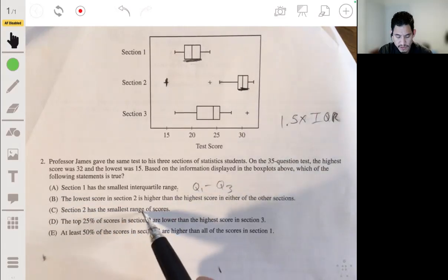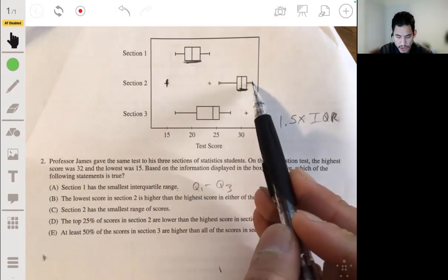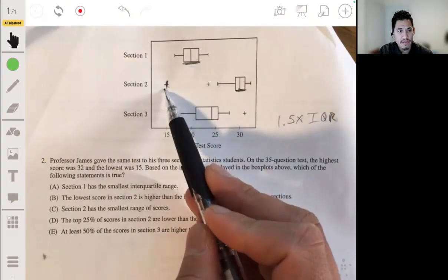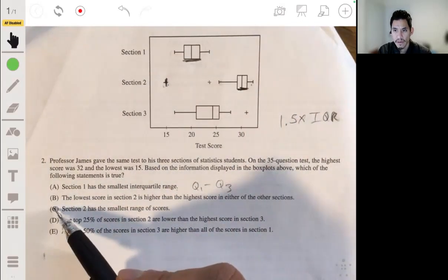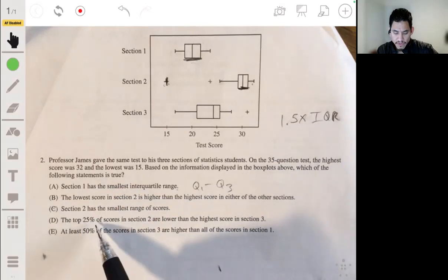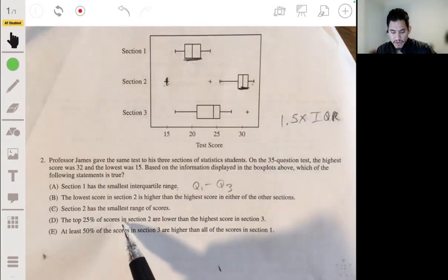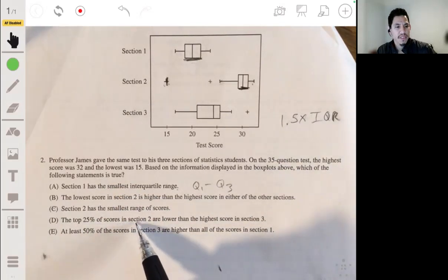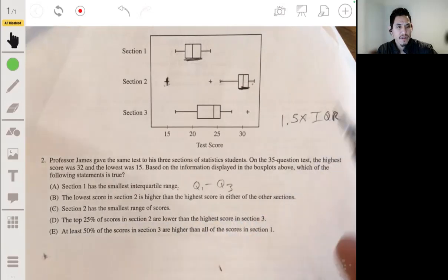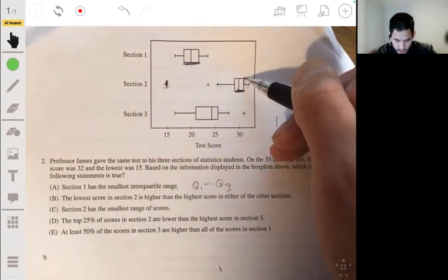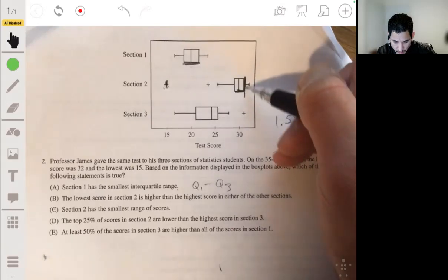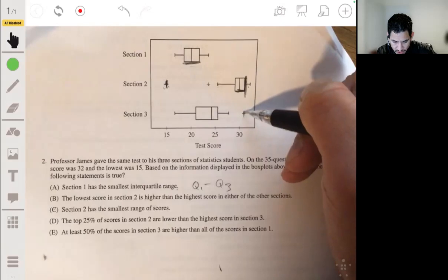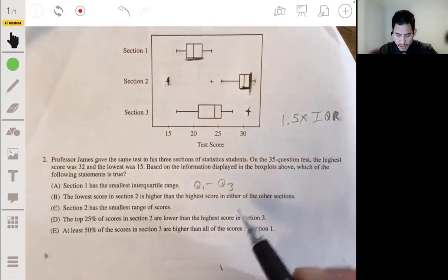I assume they were trying to probably get you to think about this one. So it's not two or it's not B. C, section two has the smallest range of scores. No, because remember, these count as value. So the range goes all the way from here to here. So it's not going to be C. The top 25% of scores in section two are lower than the highest score in section three. The top 25% of scores in section two would be right here. And the highest score in section three is right here. So it's pretty close but it's not going to be D either.